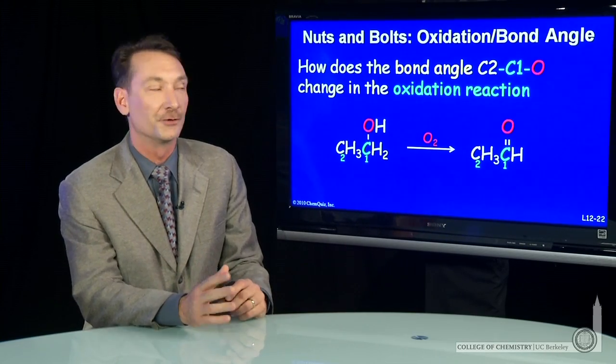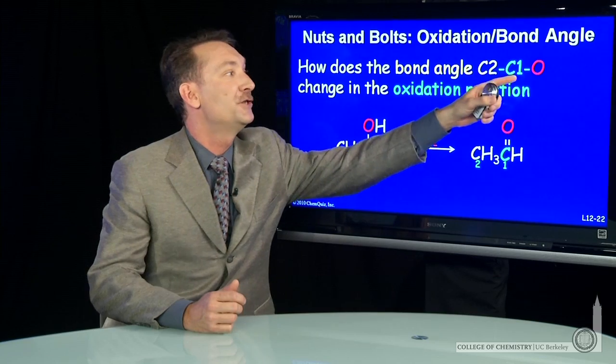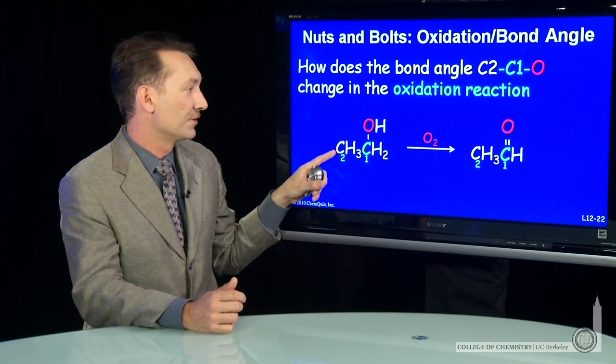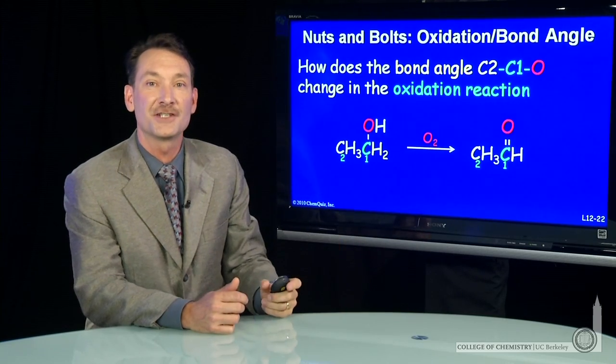Let's look at some bond angles in two different molecules. How does the bond angle, that is the C1-C2-oxygen bond angle, carbon 1, carbon 2 oxygen, so this bond angle here, how does that change during this oxidation reaction?